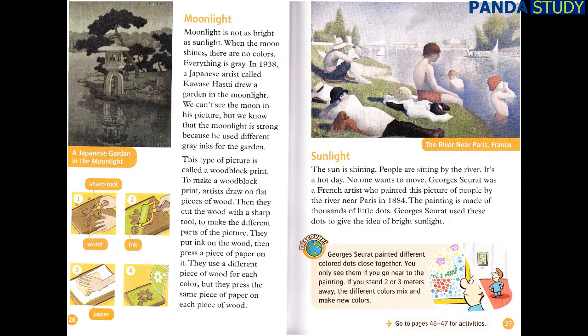Moonlight. Moonlight is not as bright as sunlight. When the moon shines, there are no colors. Everything is gray. In 1938, a Japanese artist called Kawase Hasui drew a garden in the moonlight. We can't see the moon in his picture, but we know that the moonlight is strong because he used different gray inks for the garden. This type of picture is called a woodblock print. To make a woodblock print, artists draw on flat pieces of wood. Then, they cut the wood with a sharp tool to make the different parts of the picture. They put ink on the wood, then press a piece of paper on it. They use a different piece of wood for each color, but they press the same piece of paper on each piece of wood.